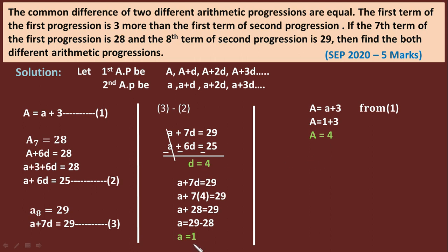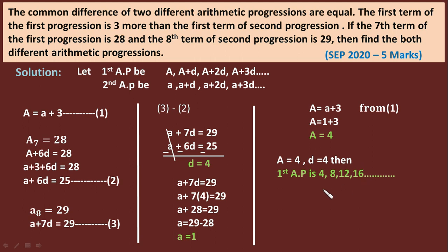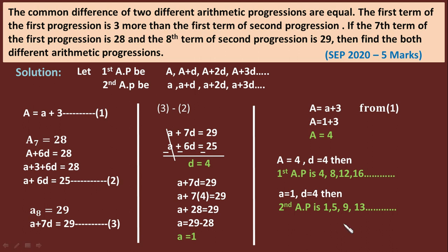We now have d = 4, small a = 1, and capital A = 4. The first AP with A = 4 and d = 4 is: 4, 8, 12, 16, ... The second AP with a = 1 and d = 4 is: 1, 5, 9, 13, ... This is the required answer. Practice this again and again. Thank you for watching.